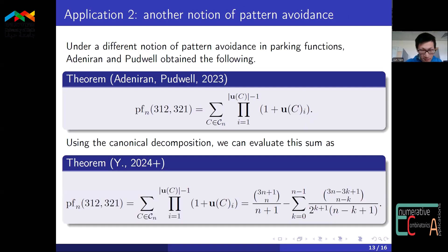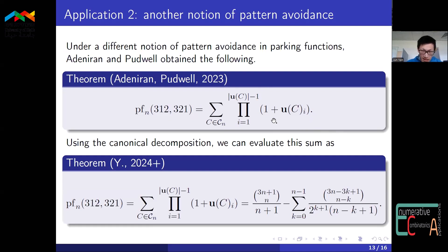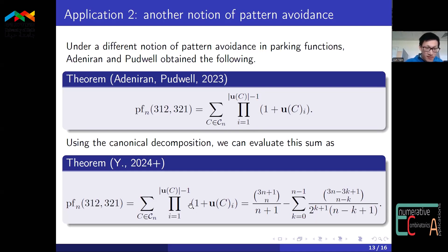The second application involves a different notion of pattern avoidance, used by two authors in their 2023 paper. They prove that under this different notion, the number of parking functions avoiding the patterns 3-1-2 and 3-2-1 together is given by a formula where the weight function is F(x) = 1 + x, with the last term in the product omitted. They did not know how to evaluate this explicitly, but now using the canonical decomposition method we are able to find an explicit formula for the number of these parking functions.